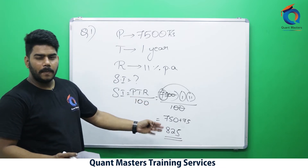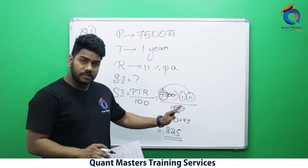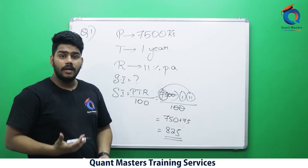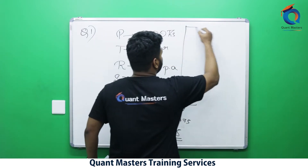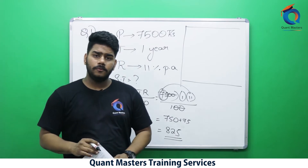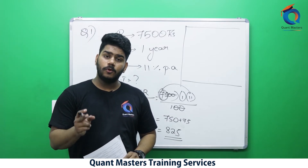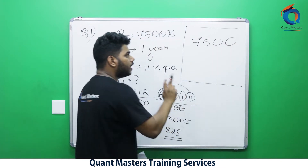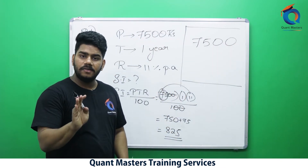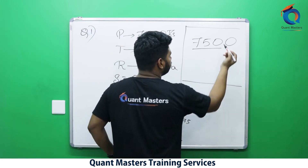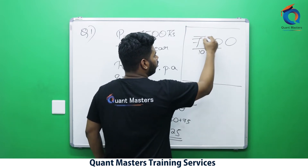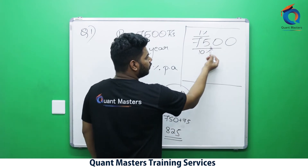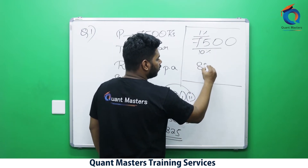Applying the formula and getting the answer — but I wouldn't recommend this method, even though this is how most people solve it. You should know the concept, but here is the technique which helps you solve questions faster. I am charging 11% per annum, which means in one year I am charging 11% extra. My principal is ₹7,500. Can I split 11% as 10% plus 1%? 10% of 7500 is 750; 1% is 75. So 11% = 750 + 75 = 825.